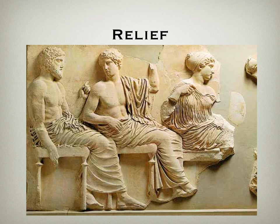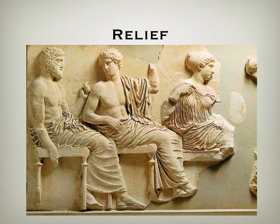The first type we're going to look at is what's called a relief. Relief sculptures can be viewed only from one side because they are projecting from the background. You can see that in the image here — this is part of the Parthenon frieze. If you went to the other side there would be nothing to see, because this is literally attached to the background. Relief sculptures are three-dimensional but they do maintain some two-dimensional qualities, meaning they are flat on at least one side.